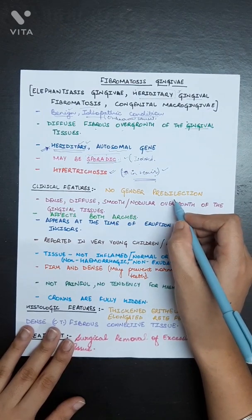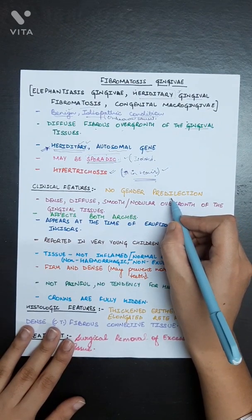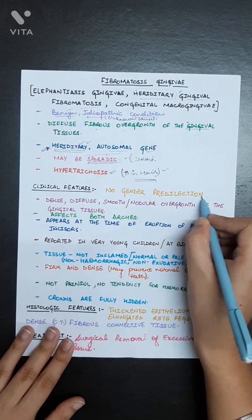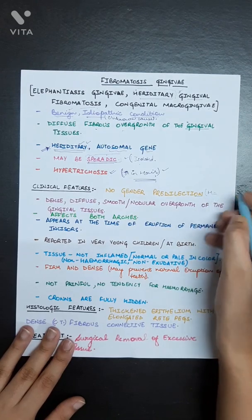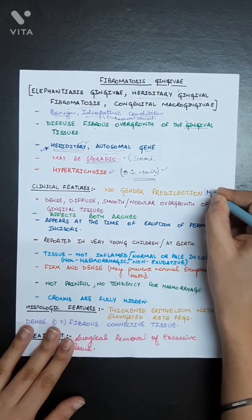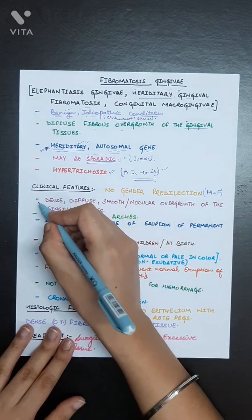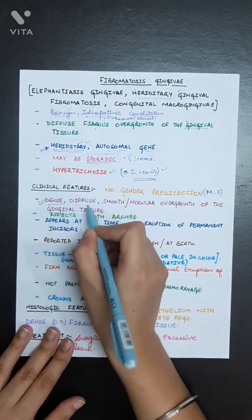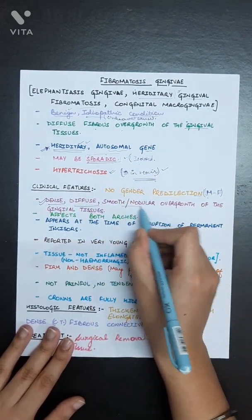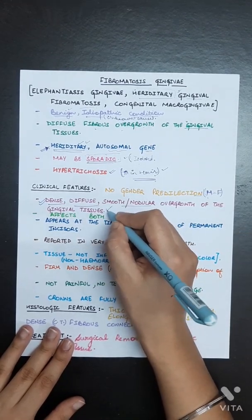The clinical features of fibromatosis gingiva: there will be no gender predilection, males and females are equally affected. There will be a dense, diffuse, smooth or nodular overgrowth of the gingival tissue.